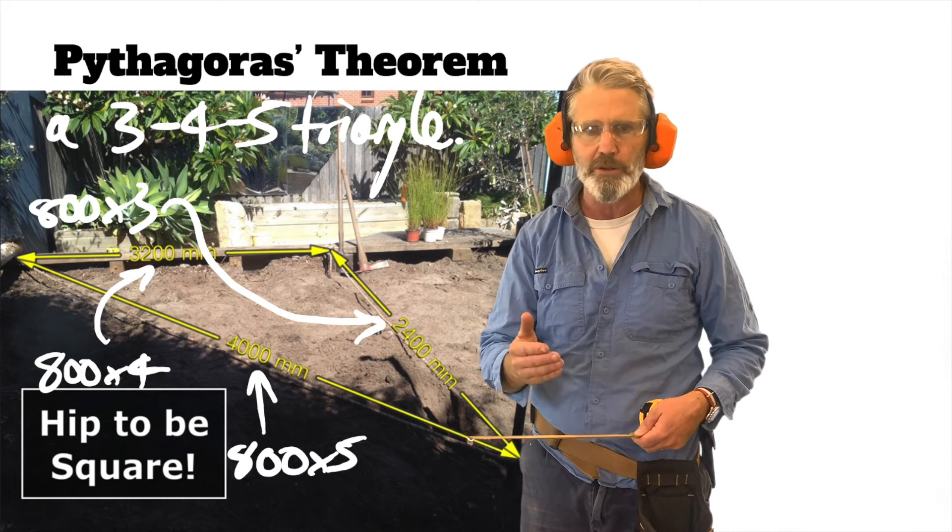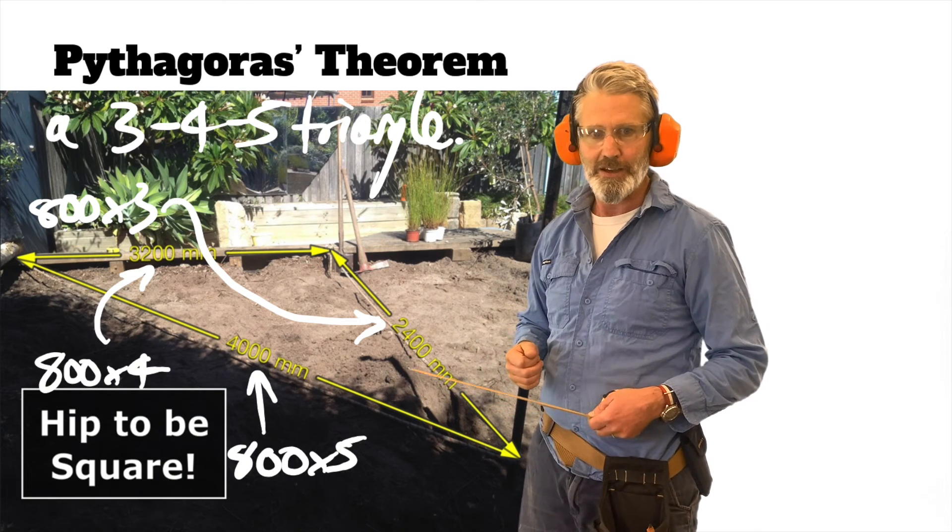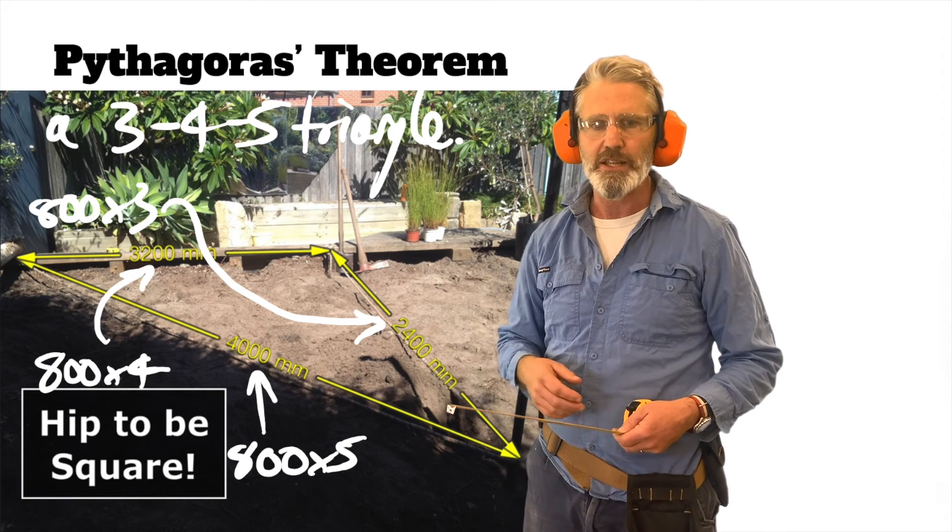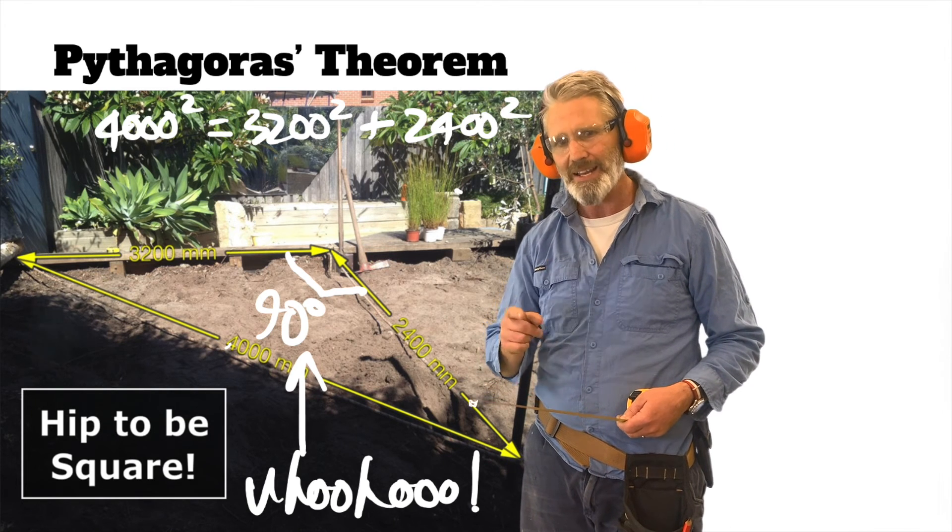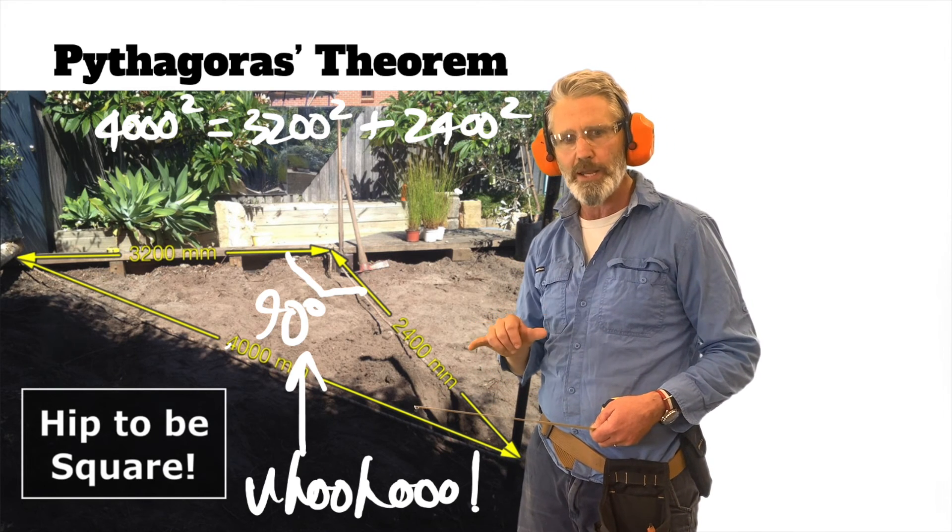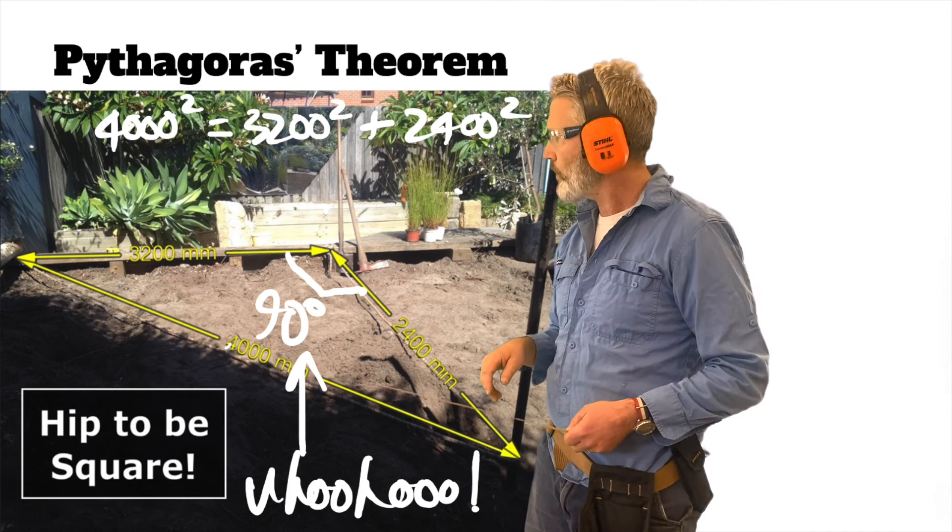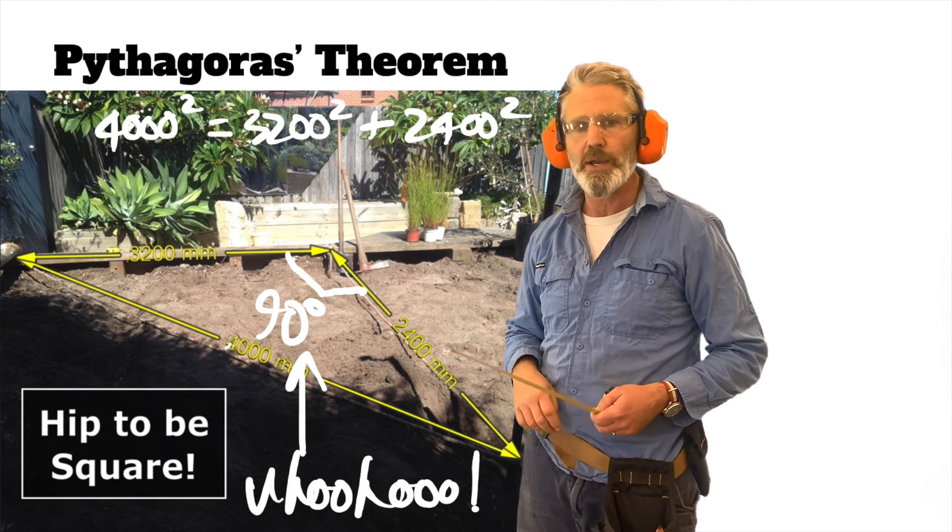So you can make it 30 meters by 40 meters by 50 meters, or any combination of that. Now 3-4-5 isn't the only ratio you can use, but anything with hypotenuse squared equals one shorter side squared plus the other shorter side squared and you're set.